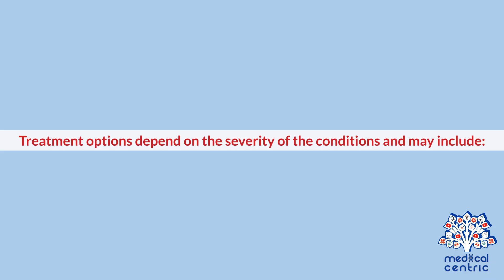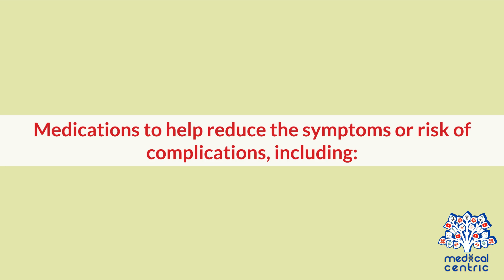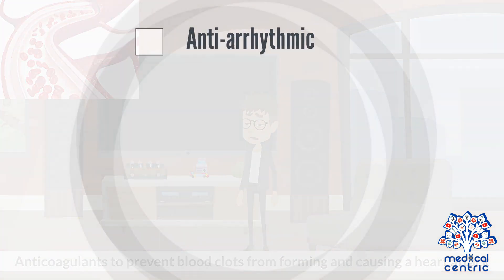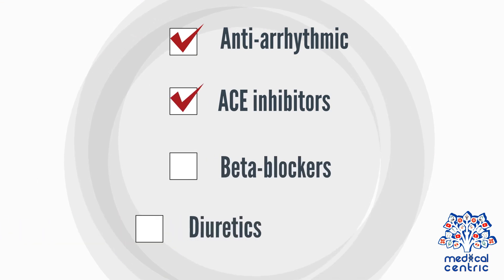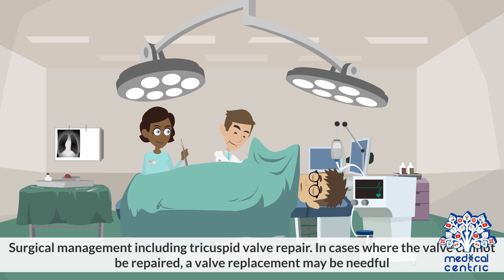Treatment options depend on the severity of the condition. For those with few to no symptoms and only minor stenosis or regurgitation, the doctor may recommend regular monitoring for any changes in the condition. Medications to help reduce symptoms or risk of complications include anti-coagulants to prevent blood clots, anti-arrhythmics, ACE inhibitors, beta blockers, and diuretics. Surgical management includes tricuspid valve repair, and in cases where the valve cannot be repaired, a valve replacement may be needed.